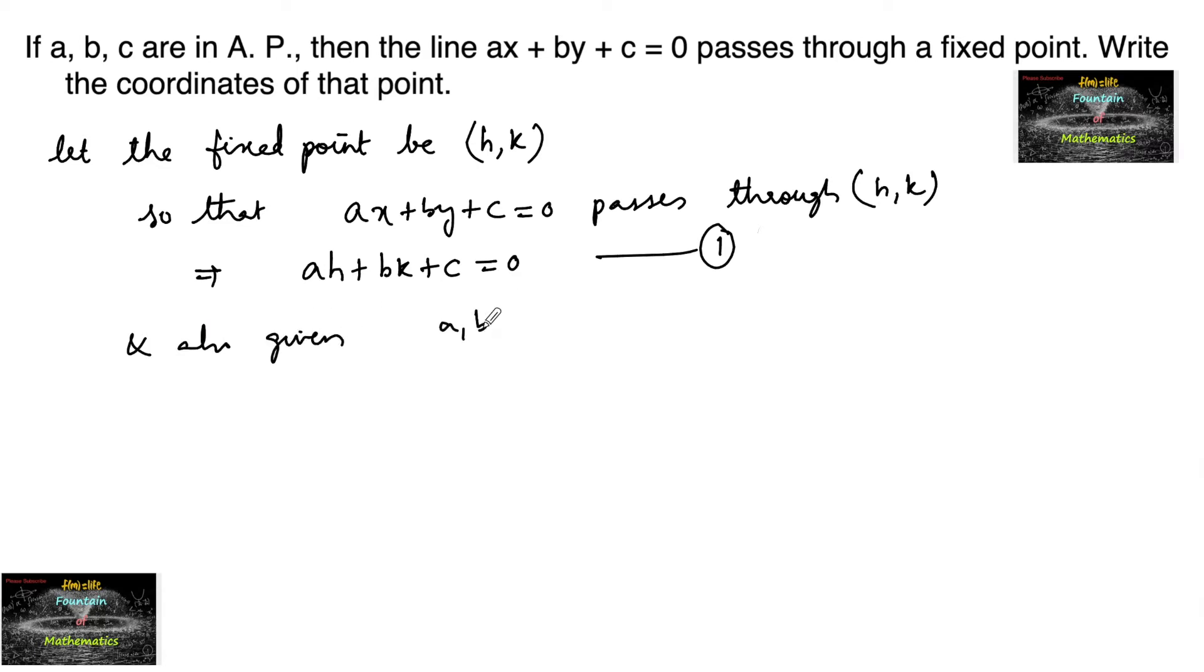And also given A, B, C are in arithmetic progression AP, which implies that 2B equals A plus C. The condition for arithmetic progression when three terms A, B, C are in AP is 2B equals A plus C, or we can write B equals A plus C upon 2.